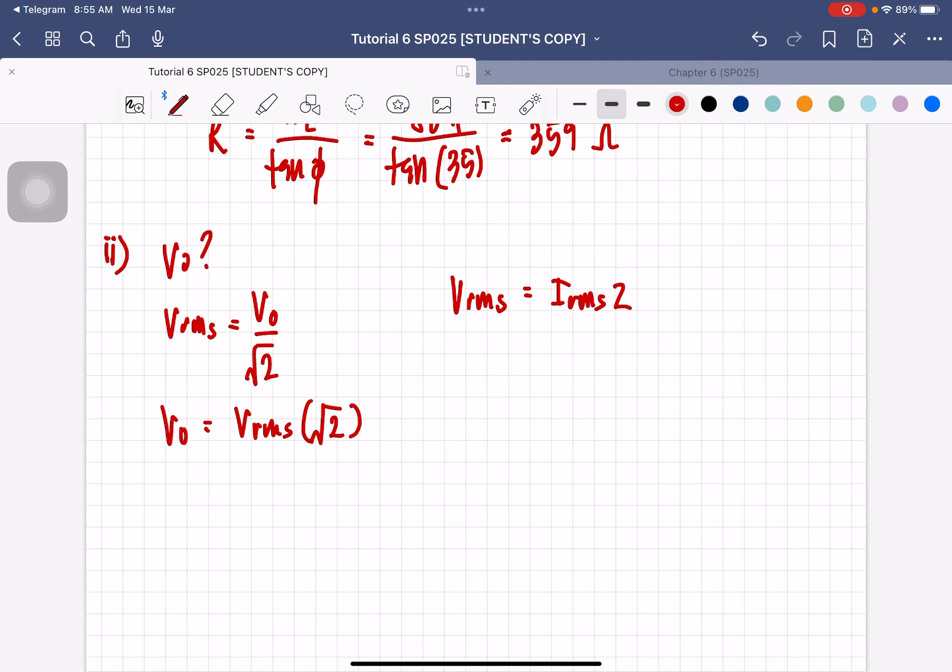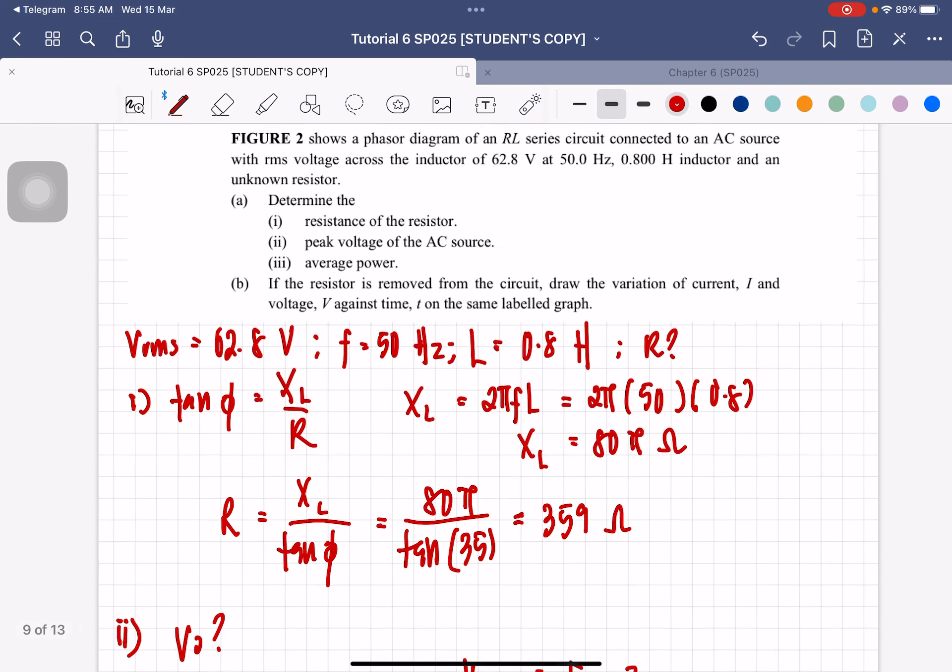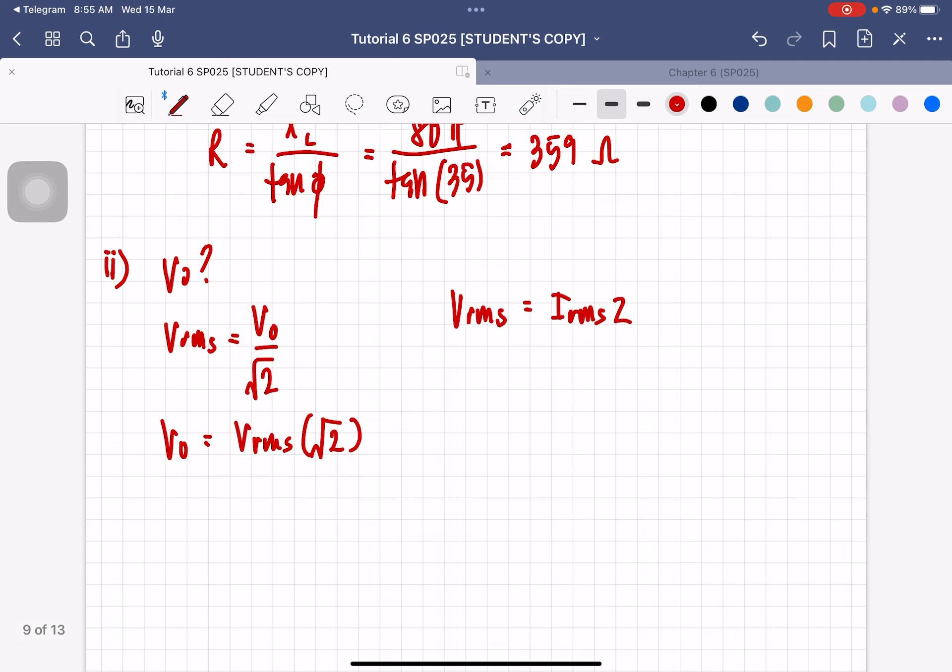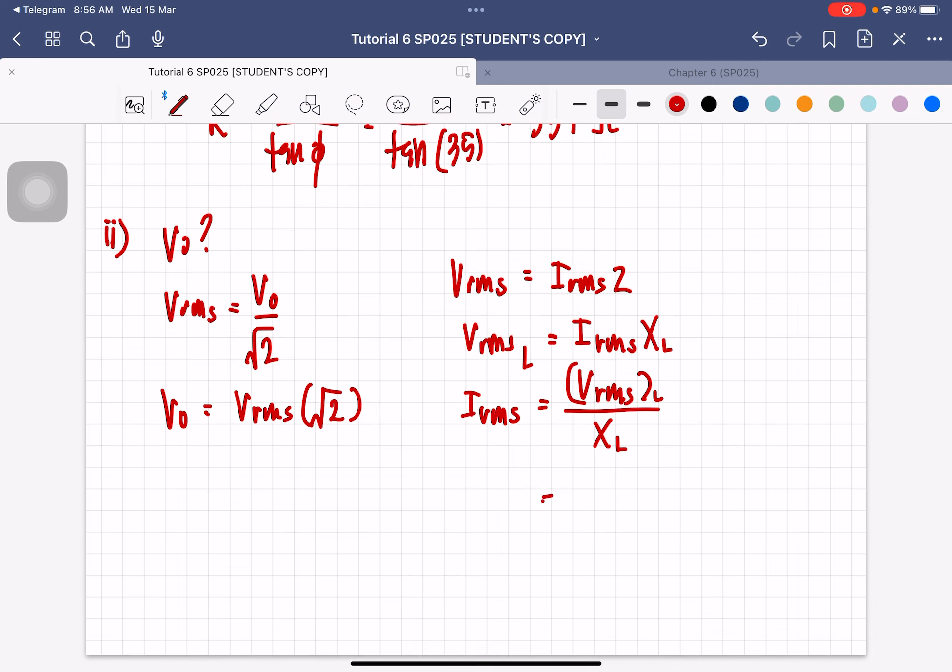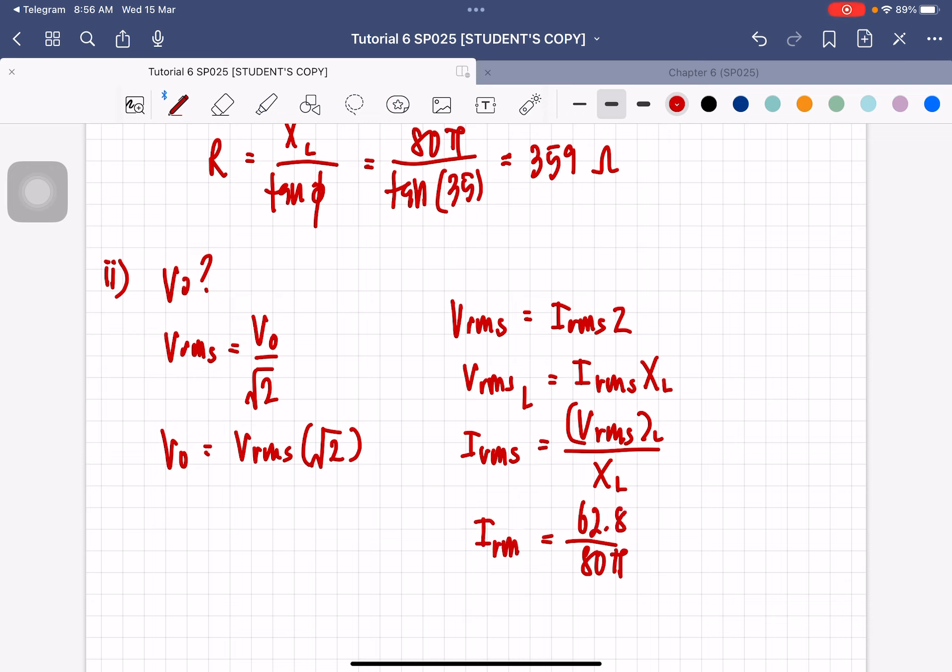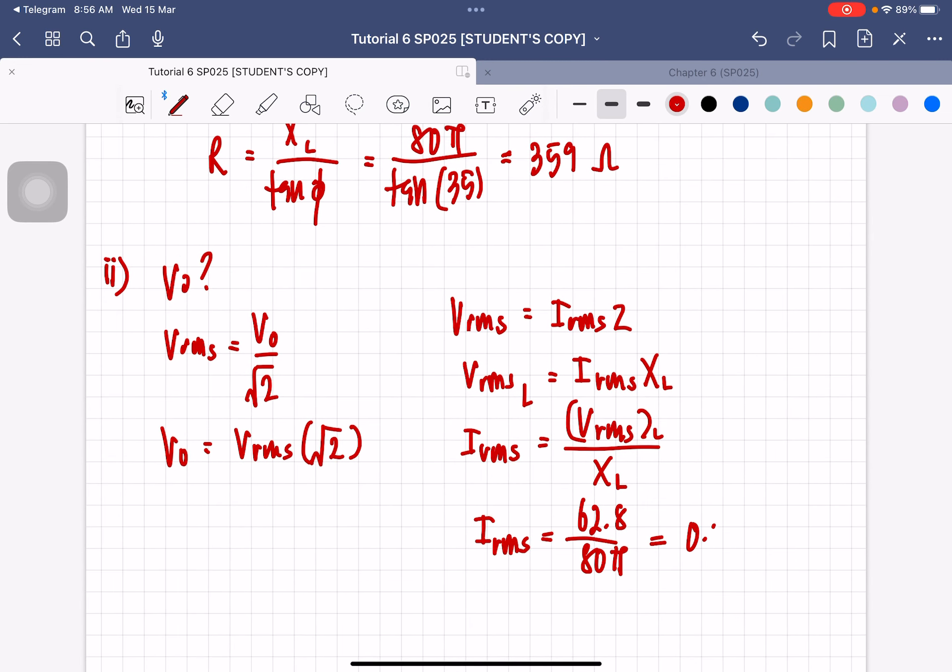So first we find IRMS. Since we already have the voltage across the inductor with the value of RMS current, we already found XL. So we just have to find RMS current. So that is VRMS for the inductor divided by XL, which is 62.8 divided by 80 pi. So this is the RMS current which will be equal to 0.25 ampere.